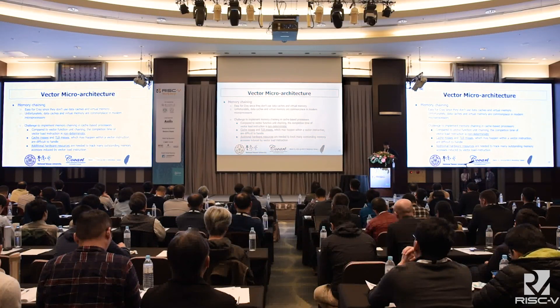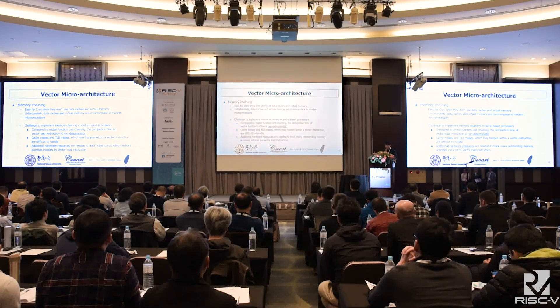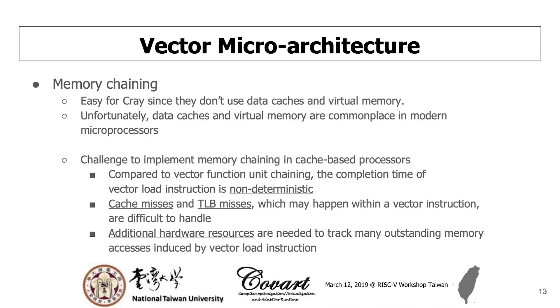Why do we especially discuss memory chaining? In the past, it was easy for Cray supercomputers to do memory chaining because they do not have data cache or virtual memory. Unfortunately, data cache and virtual memory are commonplace in modern microprocessors. The challenges of implementing memory chaining in cache-based processors are: the computation time of vector load instructions is non-deterministic, cache misses and TLB misses within a vector instruction are difficult to handle, and additional hardware resources are needed to track many outstanding memory requests induced by a vector instruction.